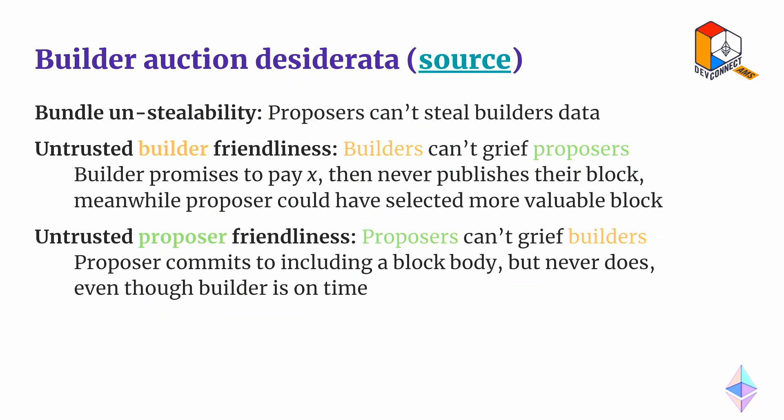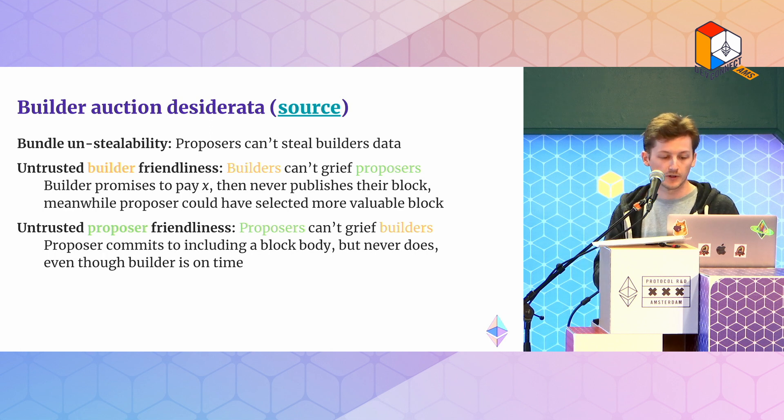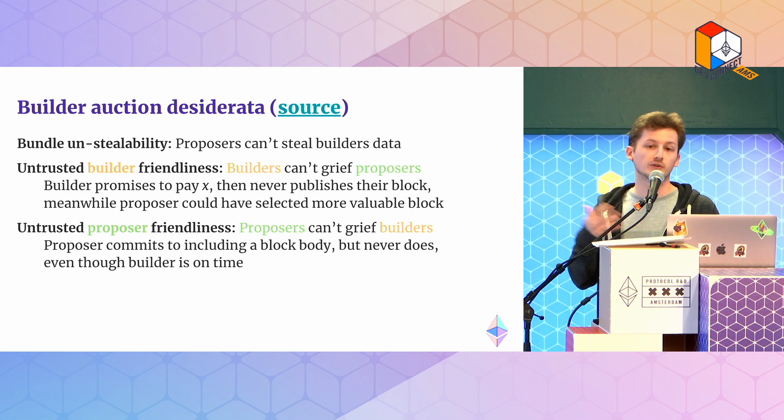So the solution is to extend the auction — it's no longer just bundles; now people can give us whole blocks, and the proposer can simply decide which block to choose. The builders are now the ones proposing these blocks. A few desiderata we want from this system: first, proposers can't steal the builder data — if they see a juicy opportunity, they have to commit to not stealing it. We have to ensure the two parties — builders and proposers — can't grief each other. For instance, the builder could promise to pay a very high amount and then never reveal the payload, making the block invalid, meaning the proposer misses the opportunity to choose a different block. And proposers shouldn't be able to grief builders by promising to include the builder, getting paid, and then not including the bundle, leaving the builder without that money.